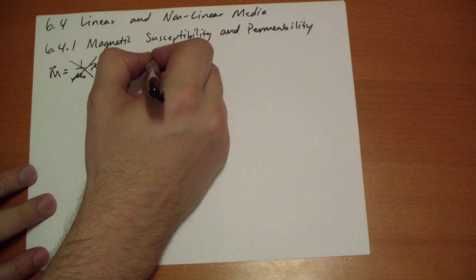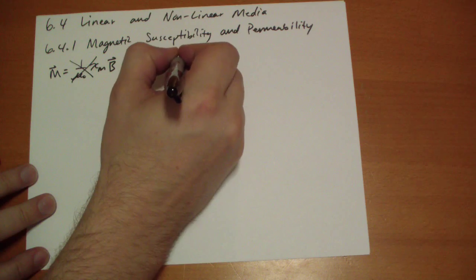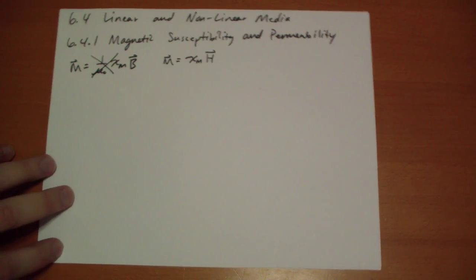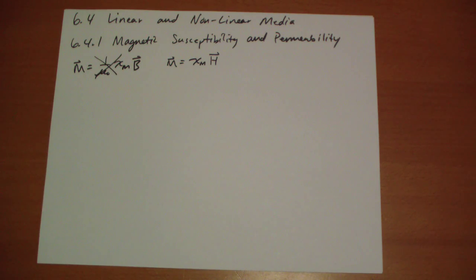Instead we use this formula: the magnetic susceptibility of H. So the magnetization of the material is proportional to the H field. And the reason why is customarily, calculating B is hard, but calculating H is easy. Given the current, you know what H is going to be.